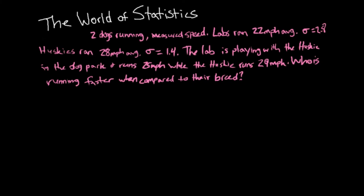Now let's say we have two dogs in a dog park — a lab and a husky. Labs on average run about 22 miles per hour with a standard deviation of 2.8, while huskies run 28 miles per hour on average with a standard deviation of 1.4. The lab is running at 25 miles per hour and the husky is running at 29 miles per hour. Who is actually running faster when compared to their breed average?